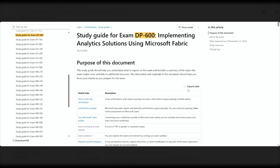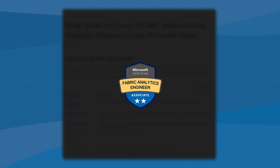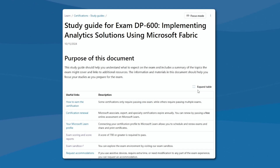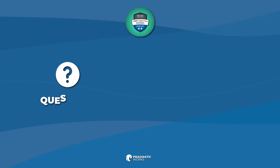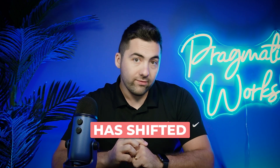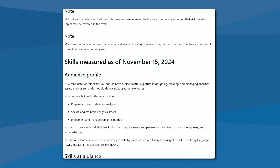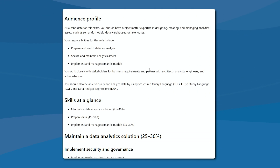Thinking about the DP600, you'll notice a little bit of a name difference. You might be accustomed to seeing the DP600 as the Fabric Analytics Engineer-based exam, but here we've got 'Implementing Analytics Solutions Using Microsoft Fabric.' The exam itself has the same number of questions, the same amount of time, the same score — but the content and its purpose has shifted. We're seeing the skills measured as of November 15th, 2024.